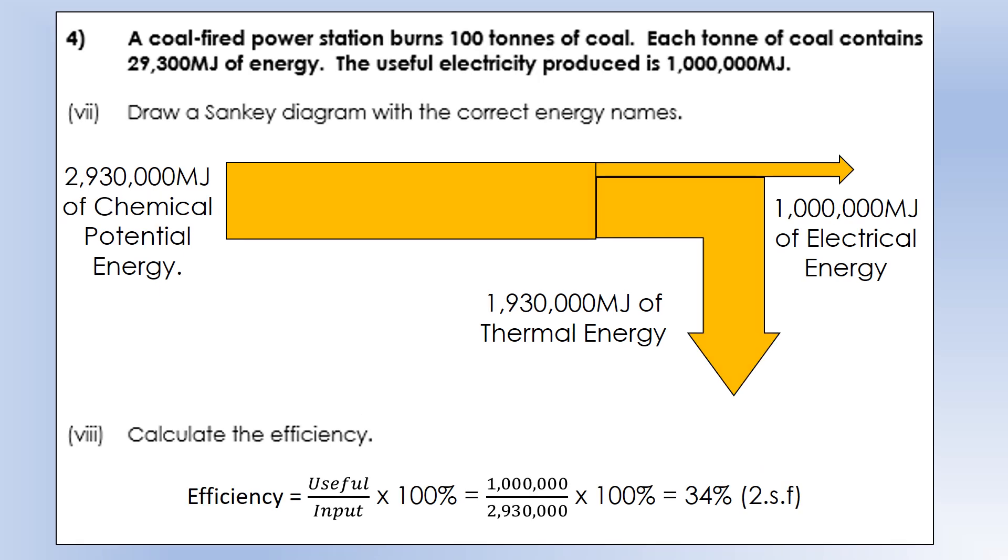The coal-fired power plant burns 100 tons of coal. Each ton of coal contains 29,300 megajoules of energy. The useful electricity produced is 1 million megajoules. Coal is chemical potential energy. We need to calculate the total energy, so we do 100 times 29,000, and that comes out as 2.9 million megajoules of chemical potential energy.